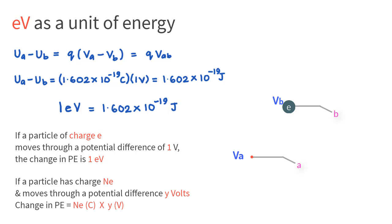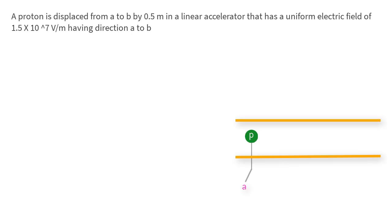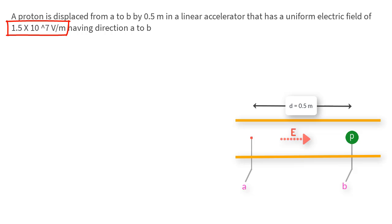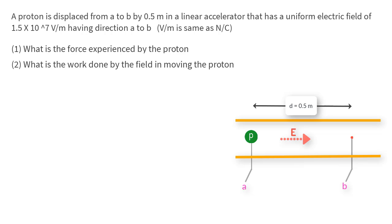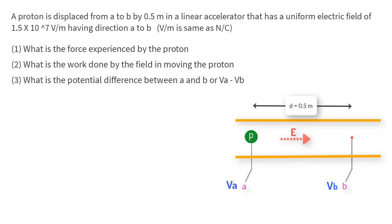Let us close with a practice problem to cement our understanding. A proton displaces from point A to point B by 0.5 meters in a linear accelerator, moving in a straight line. The electric field E is uniform along this line with a magnitude of 1.5 × 10⁷ volts per meter in the direction from A to B. The questions are: 1) What is the force experienced by the proton? 2) What is the work done by the field in moving the charge? 3) What is the potential difference VA minus VB?